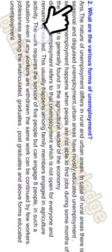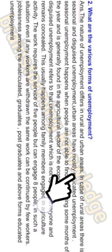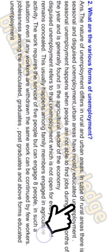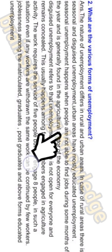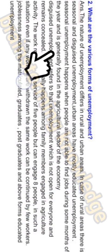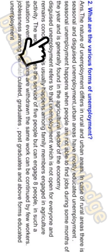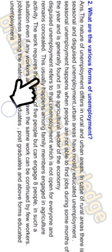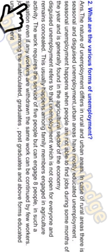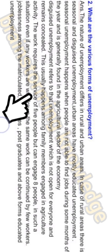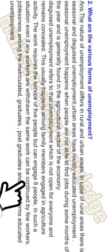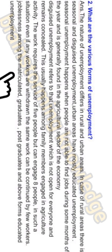Question two: What are the various forms of unemployment? The nature of unemployment differs in rural and urban areas. In rural areas there is seasonal and disguised unemployment. Urban areas mostly have educated unemployment. Seasonal unemployment happens when people cannot find jobs during certain months of the year, generally in the agricultural sector. Disguised unemployment refers to unemployment which is not visible — usually among family members in agriculture where fewer workers could do the same work. Educated unemployment refers to joblessness among matriculated, graduate, and post-graduate individuals.